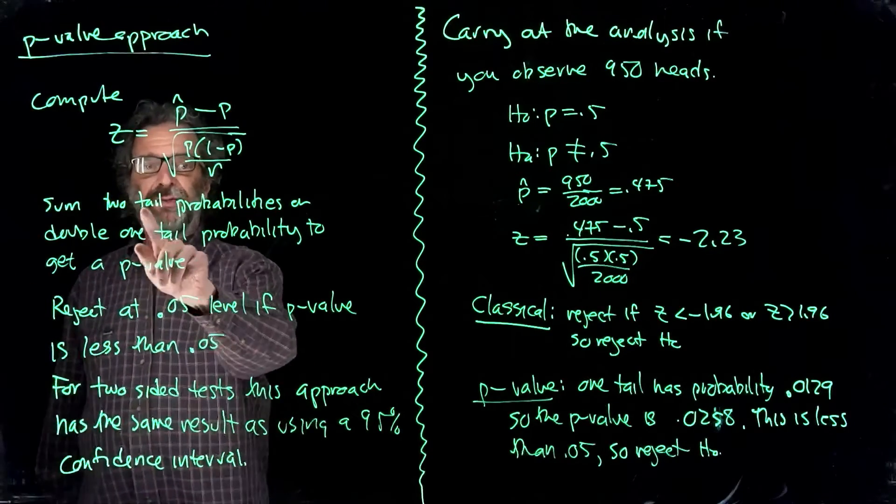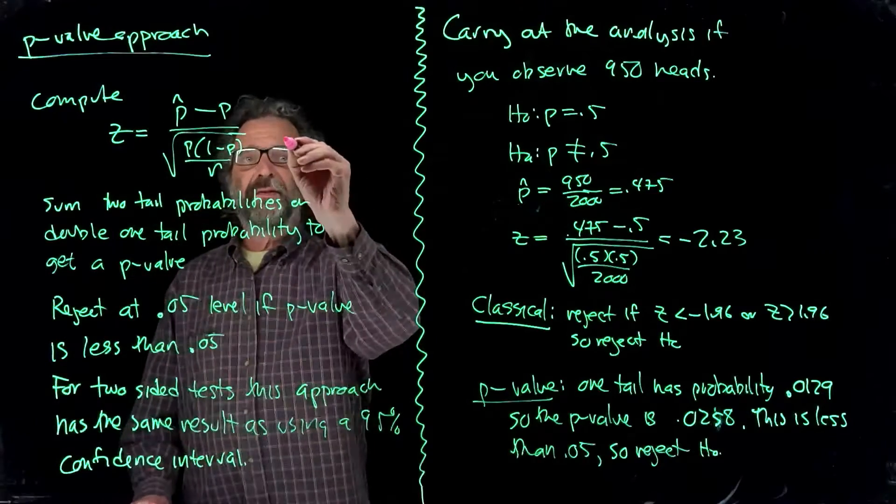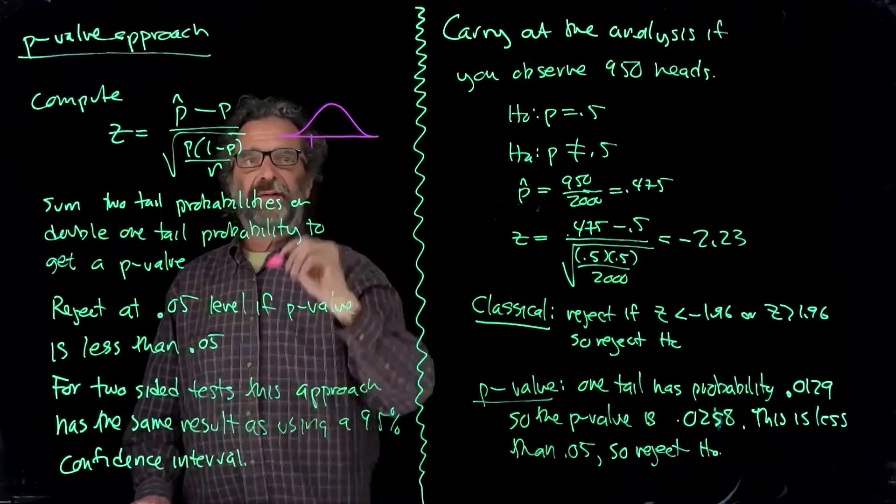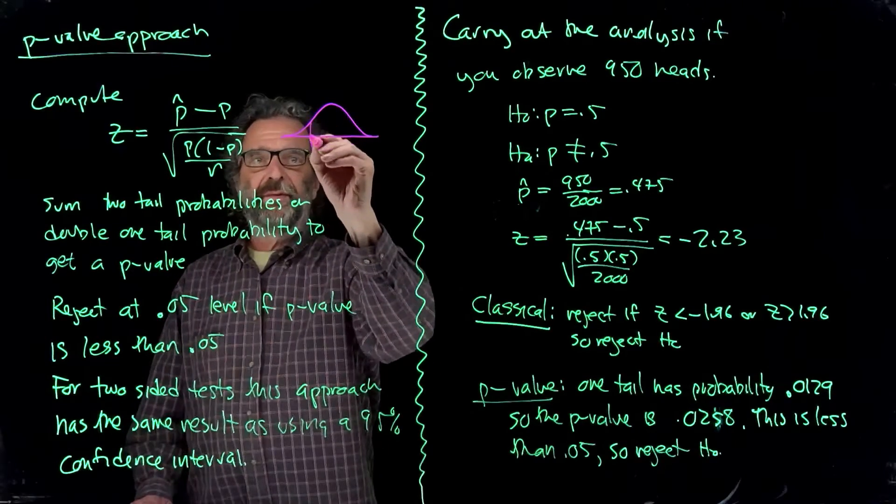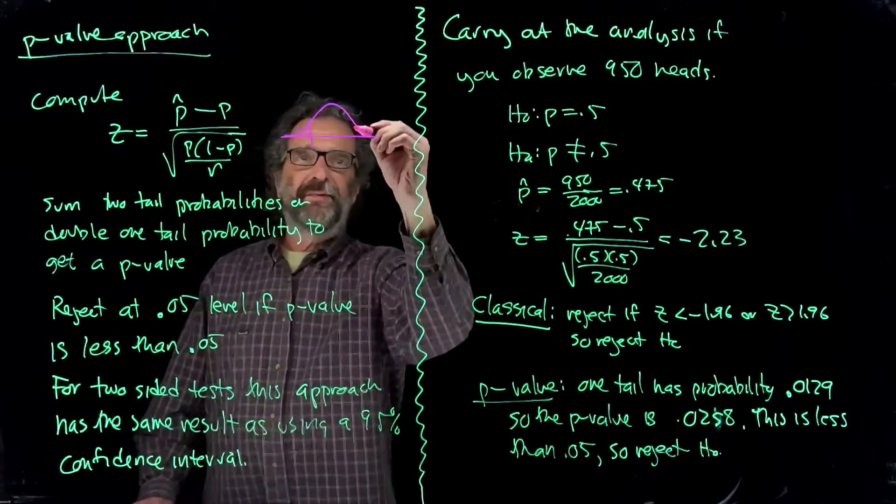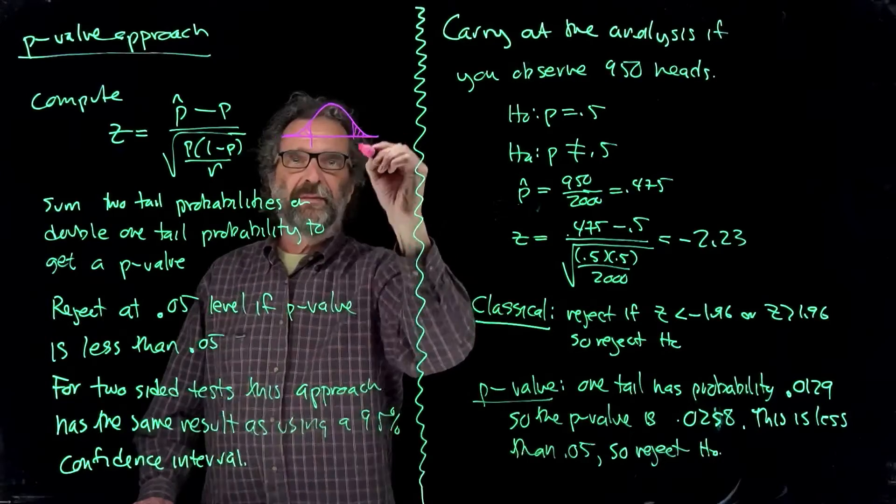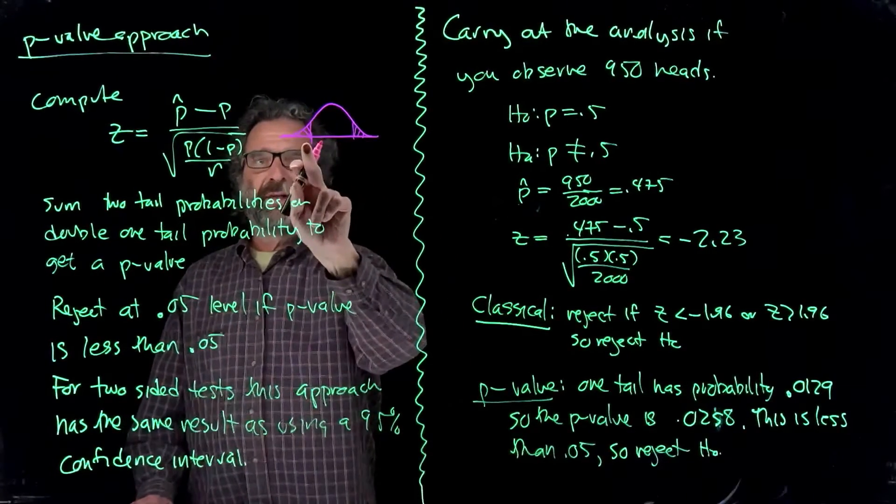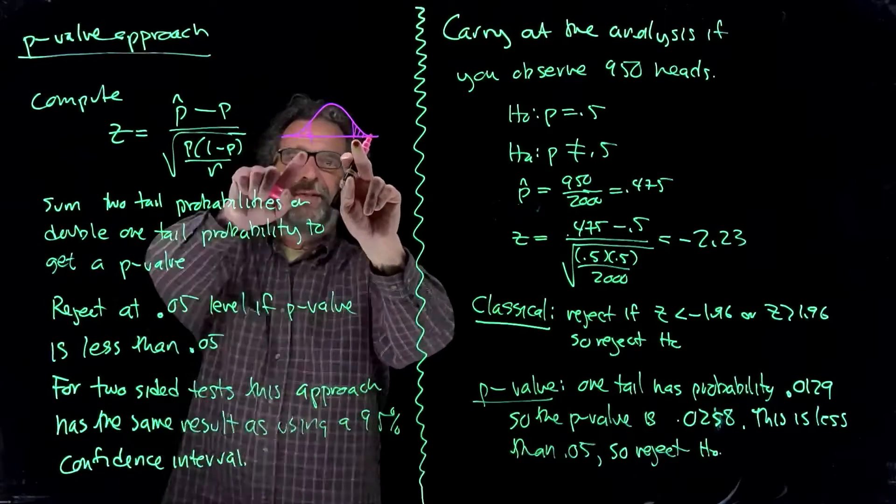And we sum the two tail probabilities. So the idea is if we observe a negative z value, say down there, we would take the tail like that and we take his friend over here, which is the same size. So if this was like negative 1.5, we go over to 1.5, we take both of these tails.